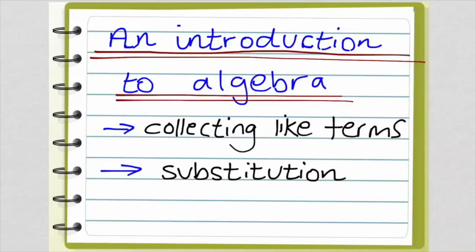Hello, and welcome to an introduction to algebra. Today we are going to be looking at collecting like terms and substitution. And also, to tell you that a crocodile has two sets of eyelids, the second being transparent so it can see underwater. Alright, but back to the maths now.